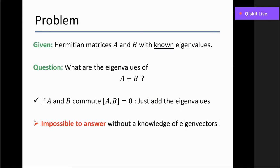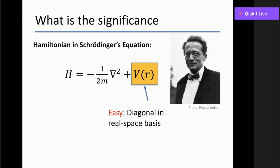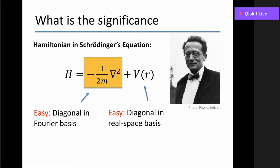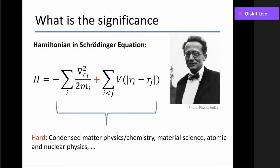This problem has significance because many applied problems have this formulation. For example, the Hamiltonian in Schrödinger's equation has two pieces: the Laplacian and the potential. The potential is diagonal in the real basis and the Laplacian is diagonal in the Fourier basis. The story is the same in many-body systems. When you put these two easy pieces together, it is a very hard problem to find the density of states. Condensed matter physics, chemistry, material science, atomic, and nuclear physics are all based on this formulation.